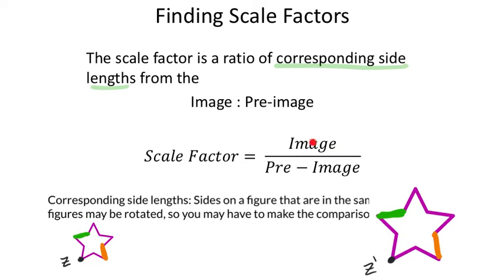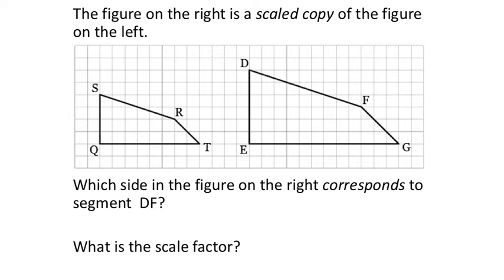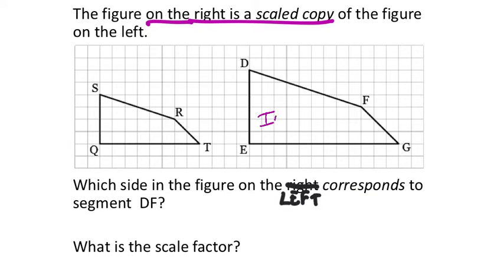Once we know the corresponding parts and side lengths, we can find the scale factor from those values. To do that, you take the image length and divide it by its corresponding pre-image length. The figure on the right is a scale copy of the figure on the left. So quadrilateral DEGF is our image, and quadrilateral SQTR is the pre-image. It is important to know the difference between these two.